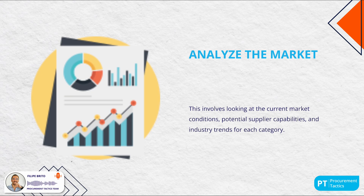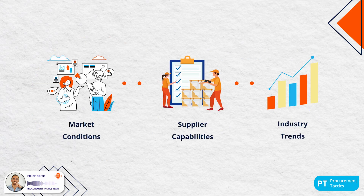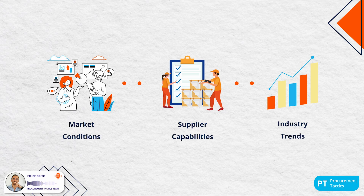The second key component is to analyze the market. This involves looking at current market conditions, potential supplier capabilities and industry trends for each category. Market conditions help companies understand the current environment surrounding their operations. Supplier capabilities cover things like production capacity and process efficiency. Industry trends are patterns and developments within the industry that impact a specific category, and understanding these helps companies stay competitive and adapt their sourcing strategies.